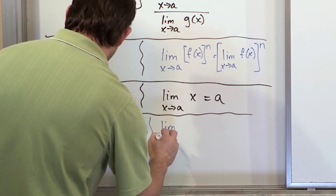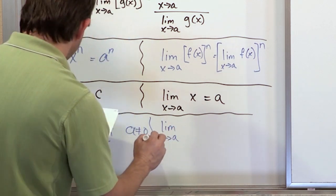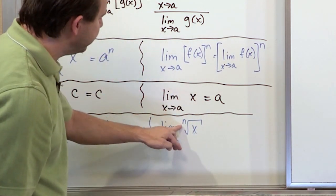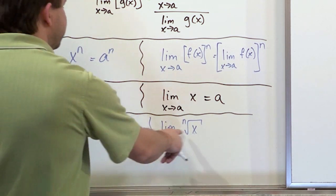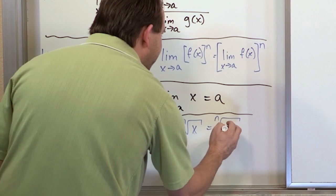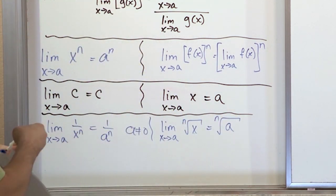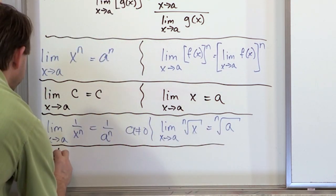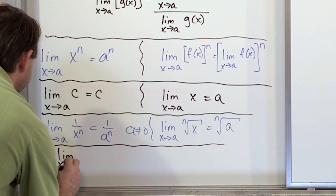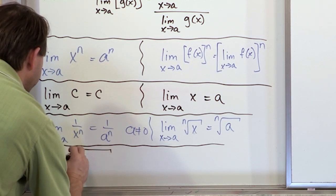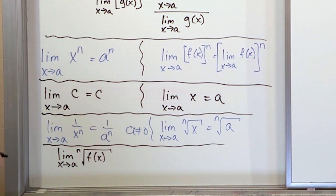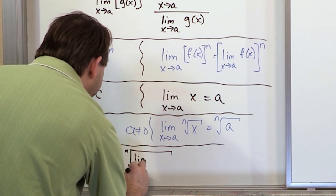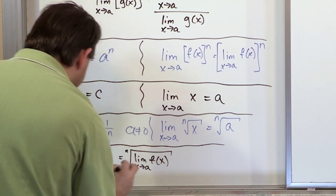What if you had the limit as x approaches a of the nth root of x? This could be a square root, a cubed root, a fourth root, whatever. Well, you just plug it in — it's going to be the nth root of a, just like that. And the last one: if you have the limit as x approaches a of the nth root of some function f of x, what you can do is move that limit on the inside. So it's basically going to be the nth root of the limit as x approaches a of f of x. And that's the last limit law.